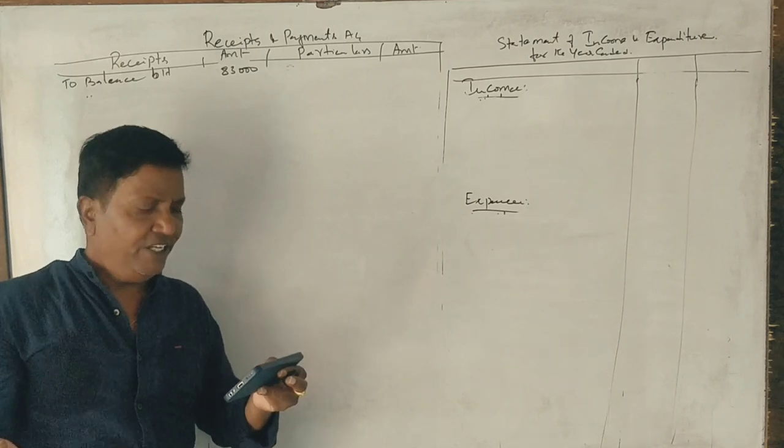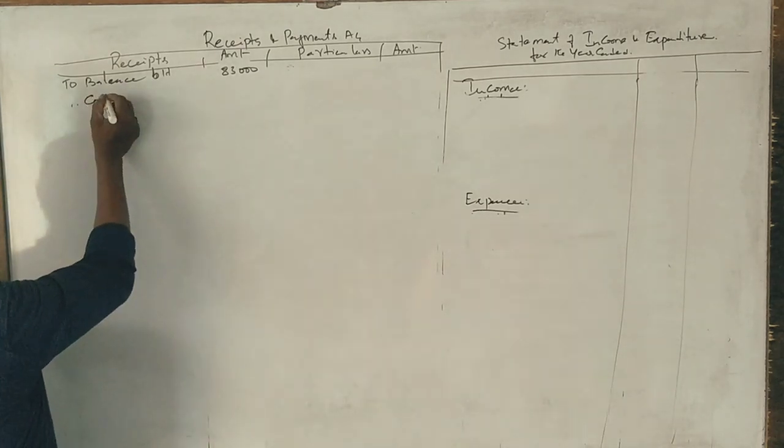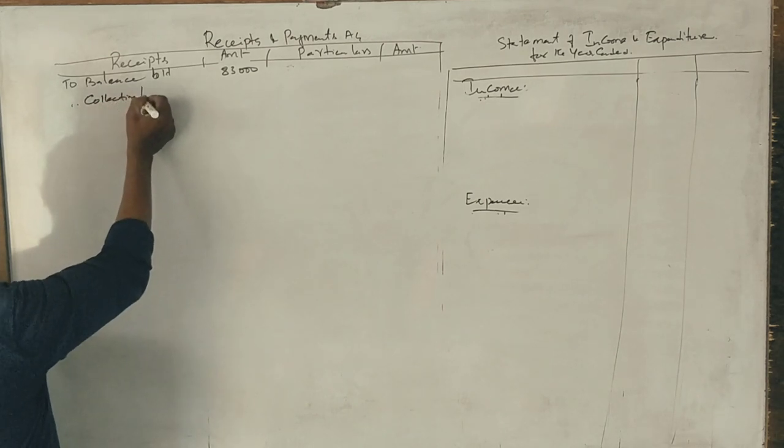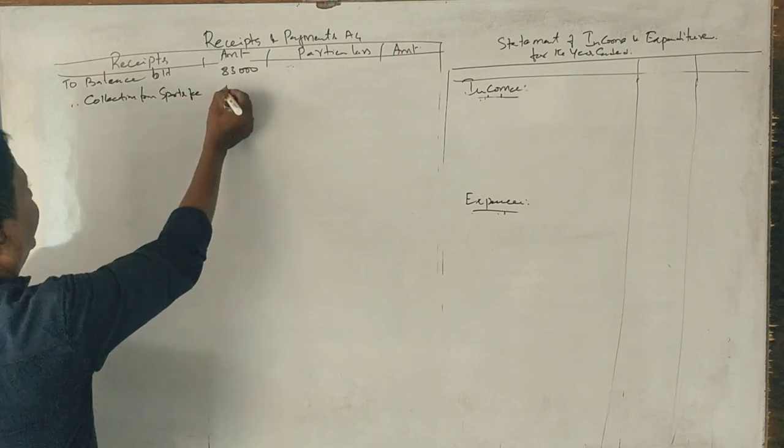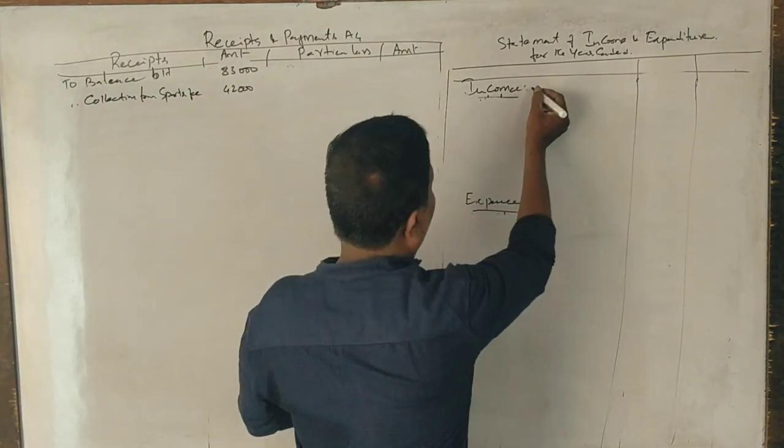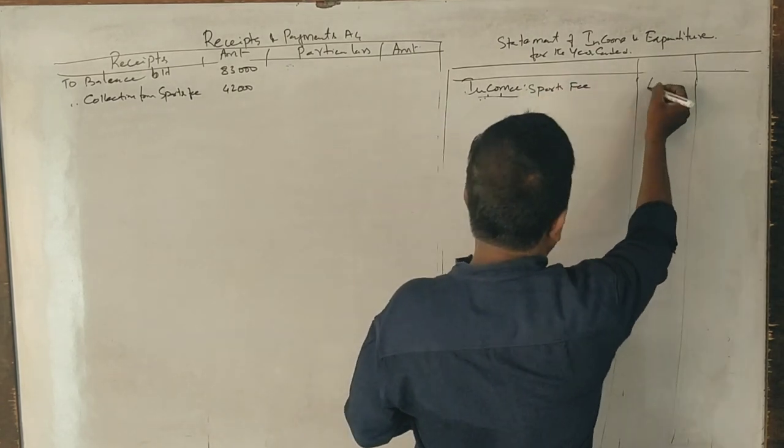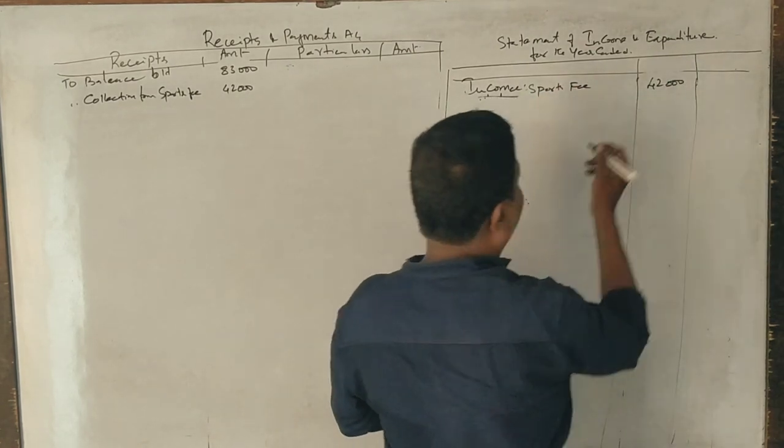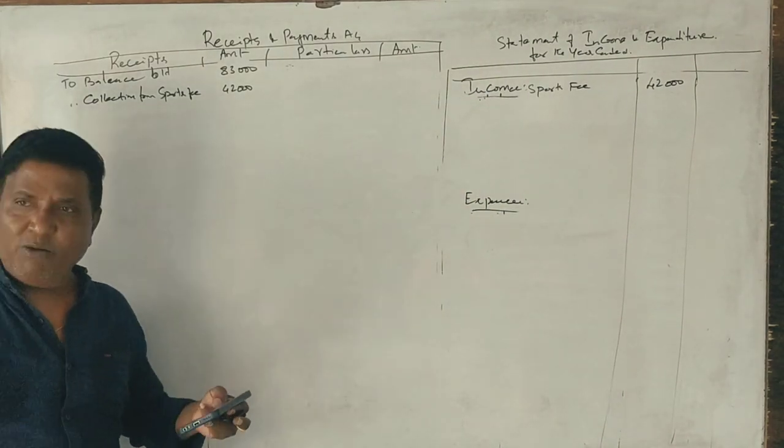Collection from sports fee. Does it go? Yes sir. Collection from sports fee, sports fee 42,000. This goes to income. Correct? Yes sir, sports fee.